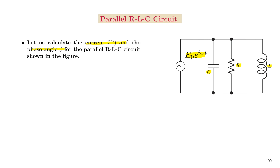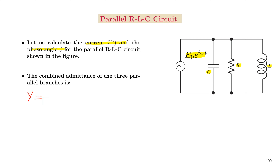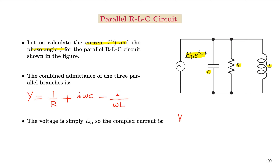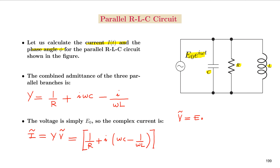This circuit consists of passive components arranged in parallel — a capacitor, resistor, and inductor connected in parallel with an applied AC voltage E0 e^{iωt}. In this case, we can very well use the admittance of the circuit to find out the current I(t). The combined admittance of the three parallel branches is Y = 1/R + iωC + i/(ωL), and the complex voltage V is E0.